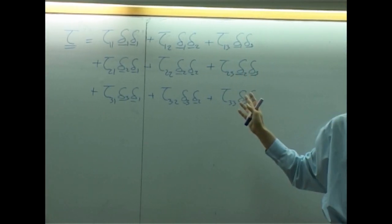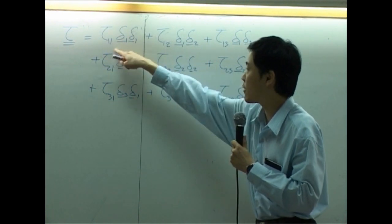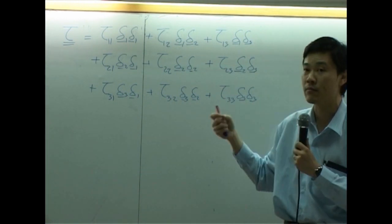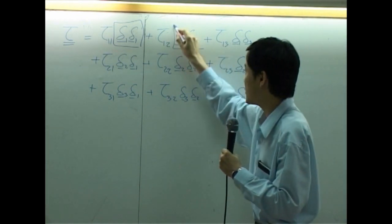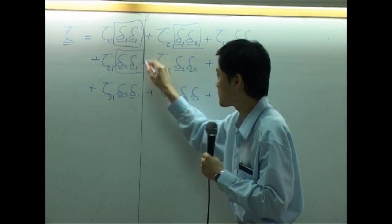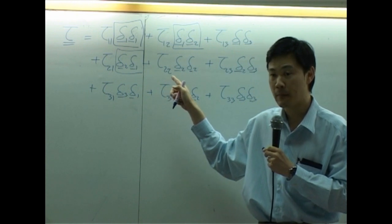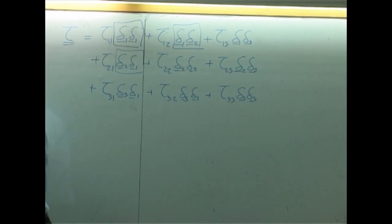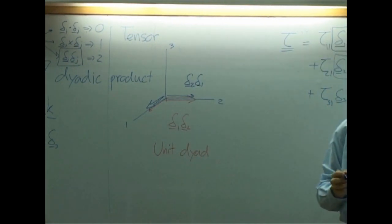The tensor consists of nine components: τ₁₁, τ₁₂, τ₁₃, and so on until τ₃₃. The numbers τ₁₁, τ₁₂, τ₁₃ are the component coefficients that you multiply with the unit tensors. Please note that unit tensor δ₁δ₂ is not the same as unit tensor δ₂δ₁, because the directions are different.